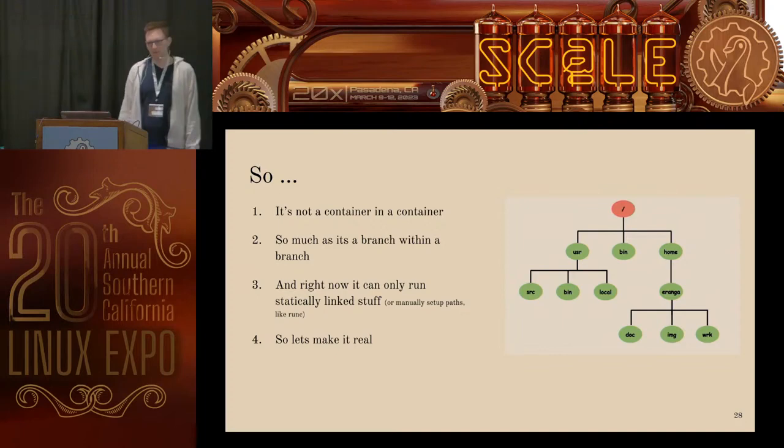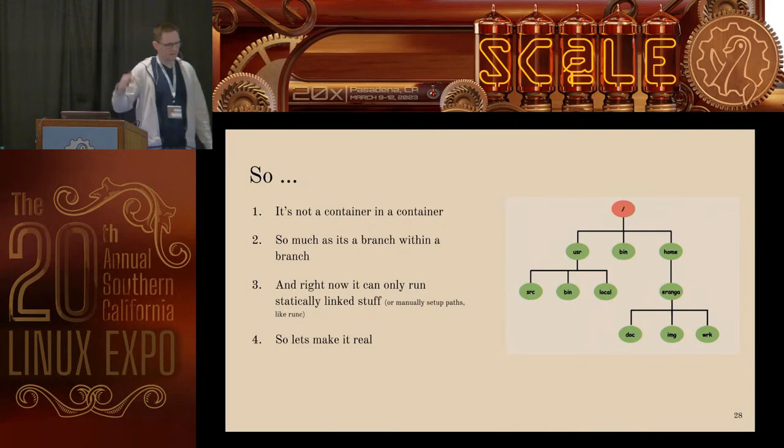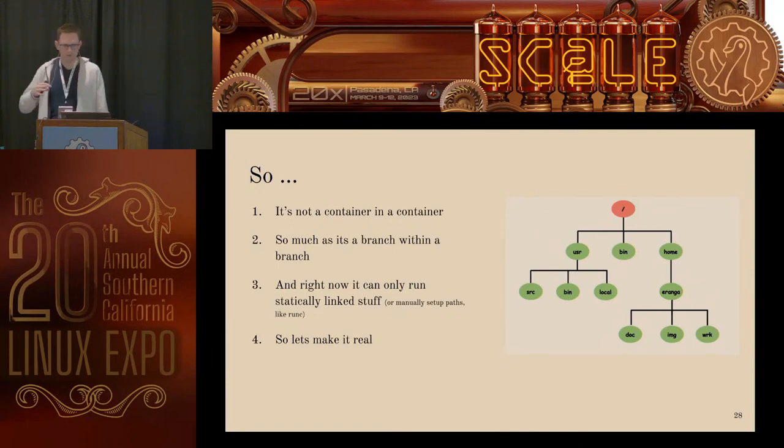But it's not totally a usable solution. Right now I can only run a statically linked thing inside this container runtime. This is sort of what RunC does — if I had set up all those lib paths correctly, I might be able to run sh inside there. But I really want to be able to take something off the shelf, like an OCI container that has everything already set up and run that.